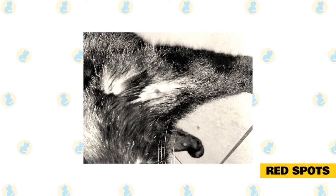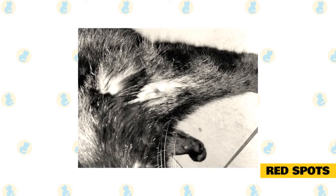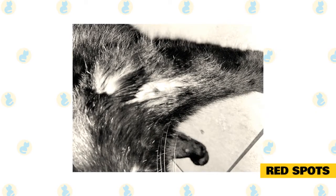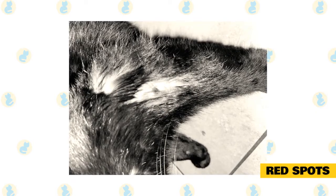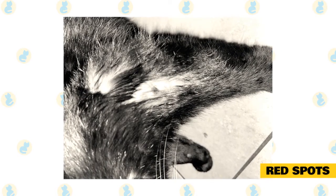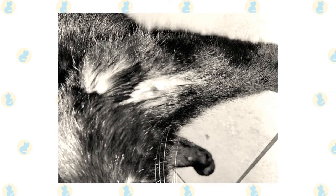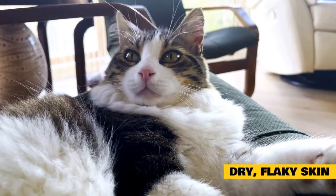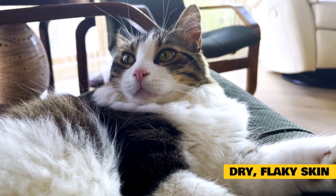As with rashes, red spots are common in cats and do not indicate a specific disease, but instead can be caused by a wide variety of conditions. Testing and visual inspection by your veterinarian will likely be required to achieve a diagnosis if your cat has red spots.